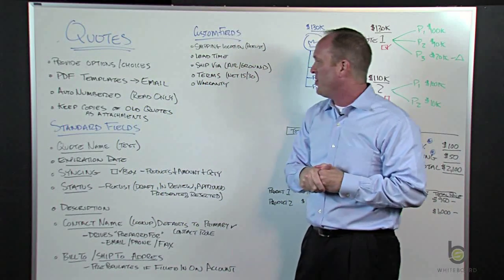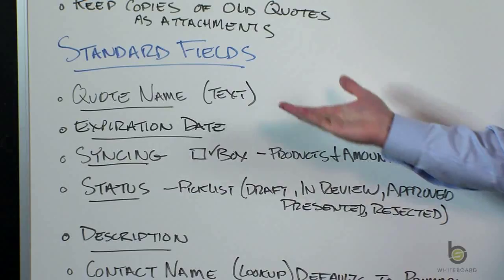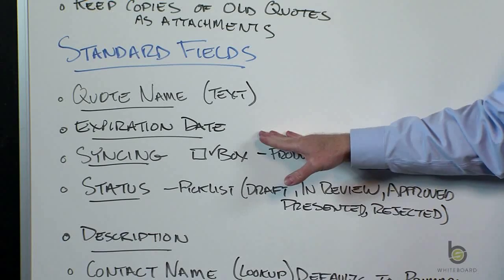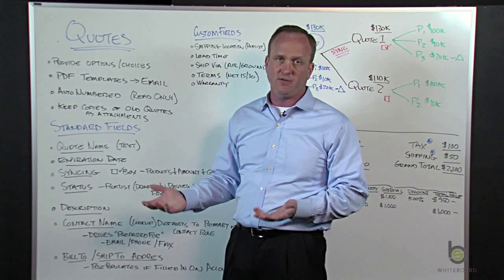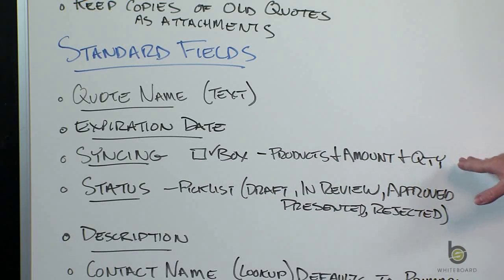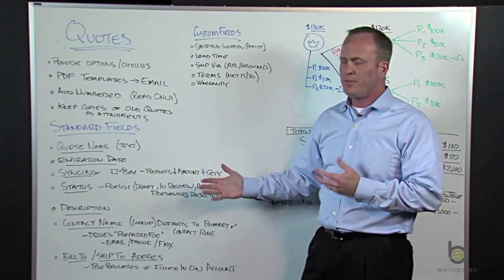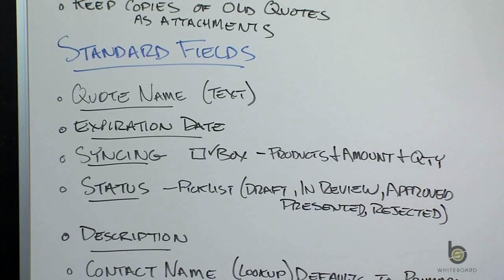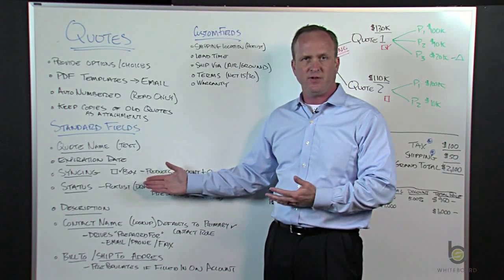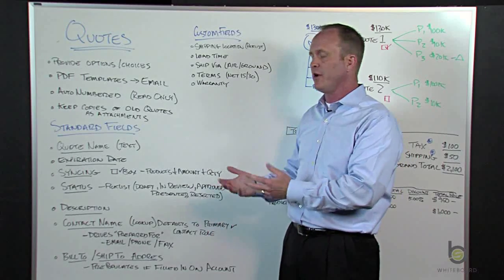Let's go through some of the standard fields. When you create a quote, it's a record in the database. You have a quote name — freeform text, kind of like your opportunity name. It will be auto-numbered. There's an expiration date field — the intent is that this quote is good for so many days, giving your customer a nudge to make a decision. The syncing checkbox keeps your products, amount, and quantities in sync between one quote and your opportunity. There's a status picklist — it has out-of-the-box values such as draft, in review, approved, presented, rejected. This is a lifecycle field for your quote showing where it is in the process — it's been presented, approved by management, sent to your customer — so you can run a report.